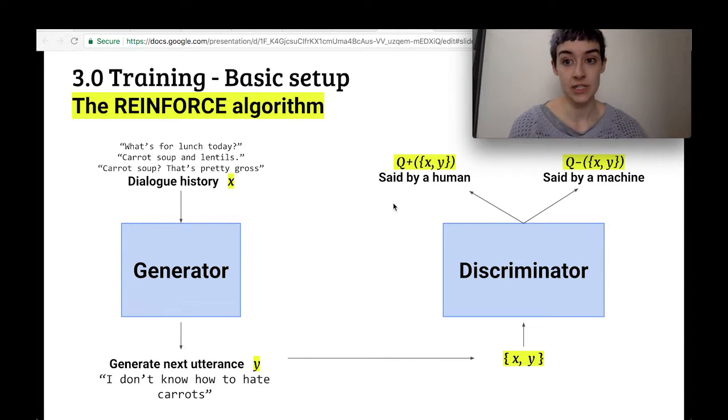So the generator is going to get a dialogue history X. It's going to pull that through and generate a new utterance Y. It's going to send X and Y to the discriminator, which is going to try to tell if Y, given the history X, is said by a machine or said by a human.